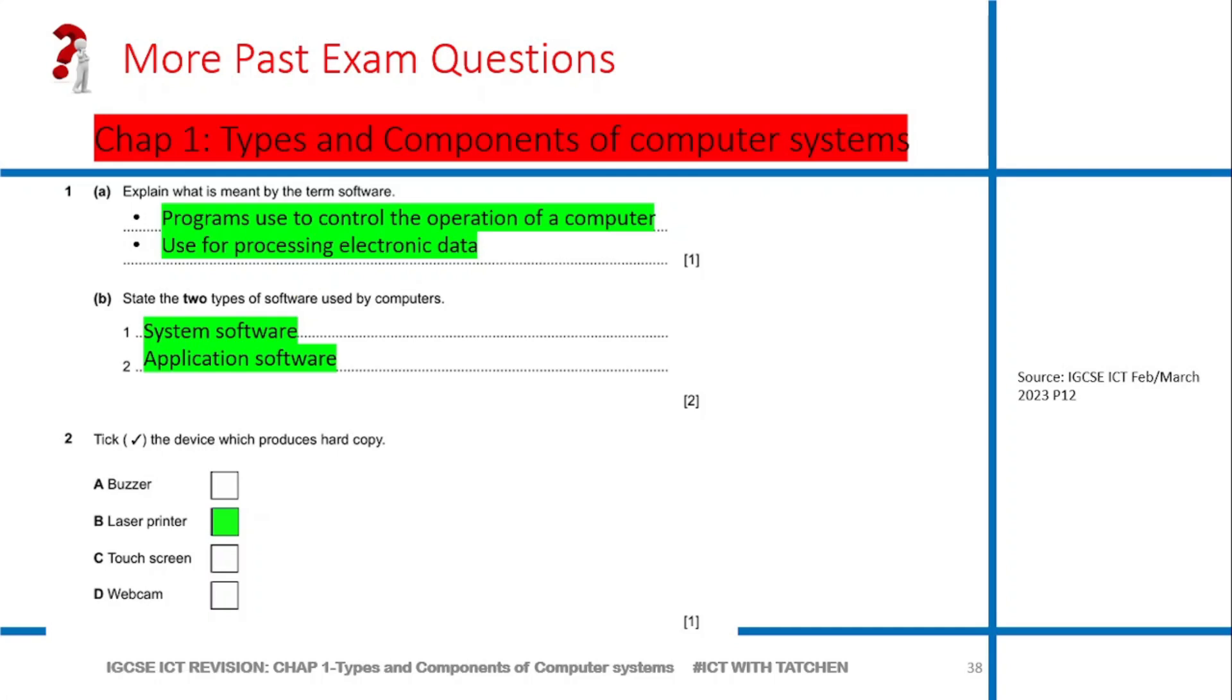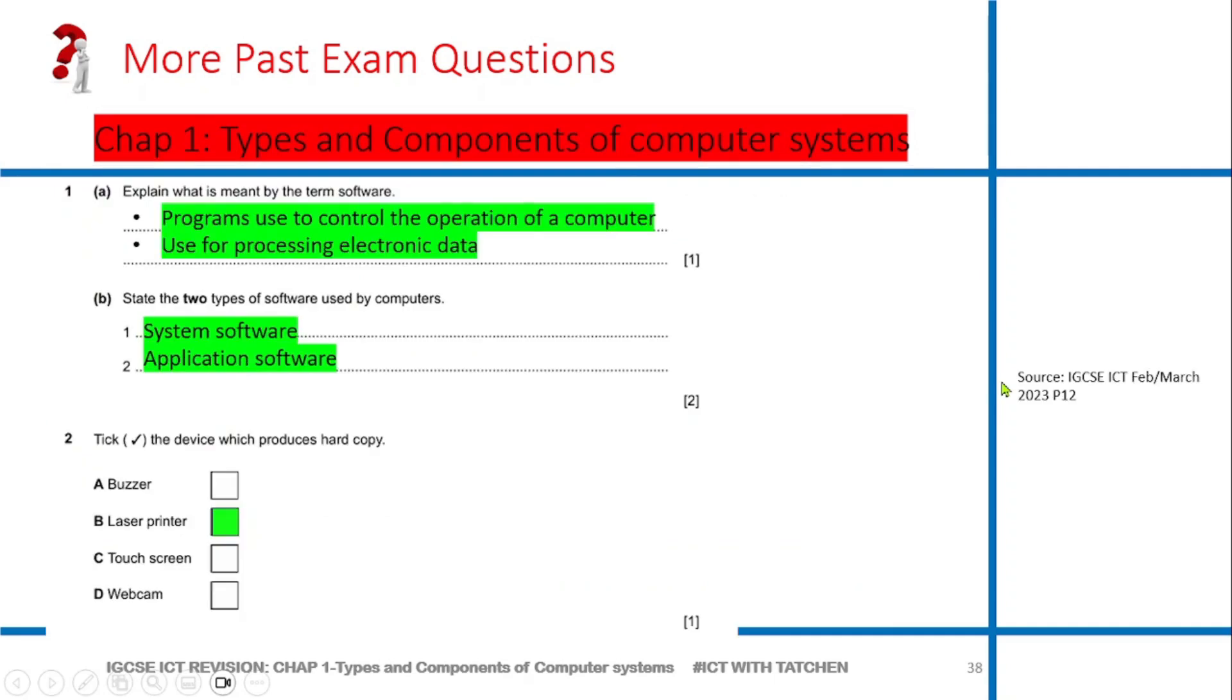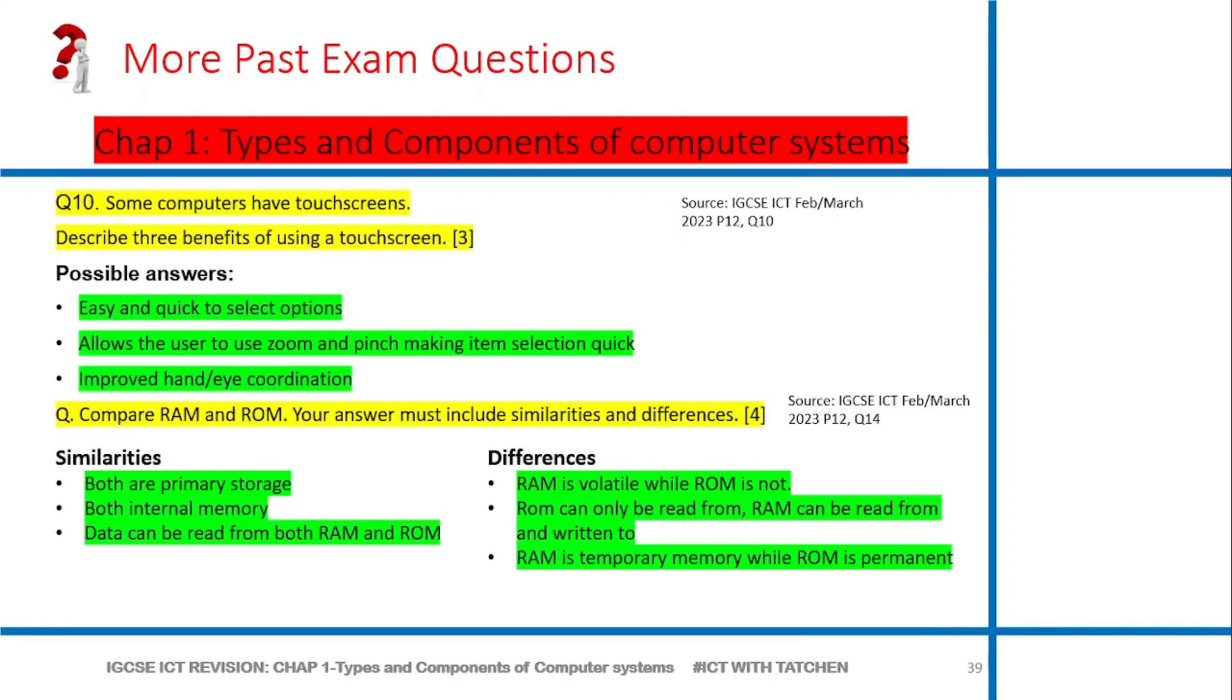State the two types of software used by computers. This is just a giveaway question: system software and application software. For question two, tick the device which produces hard copy. When you're dealing with computers, what can give you hard copy? Definitely a printer. Nothing else should pop up in your mind - printer. This question is from February/March 2023, Paper 1.